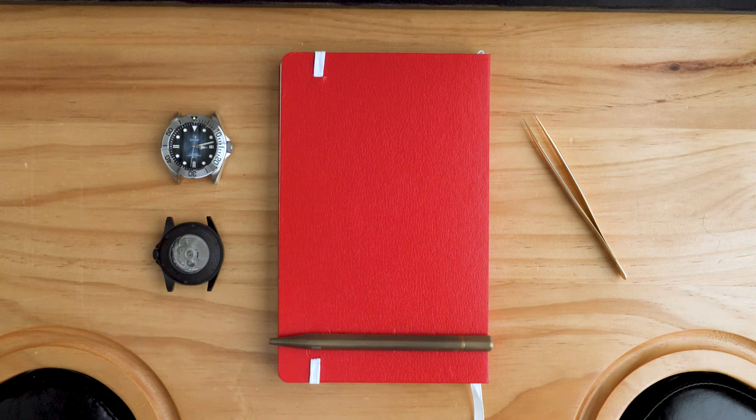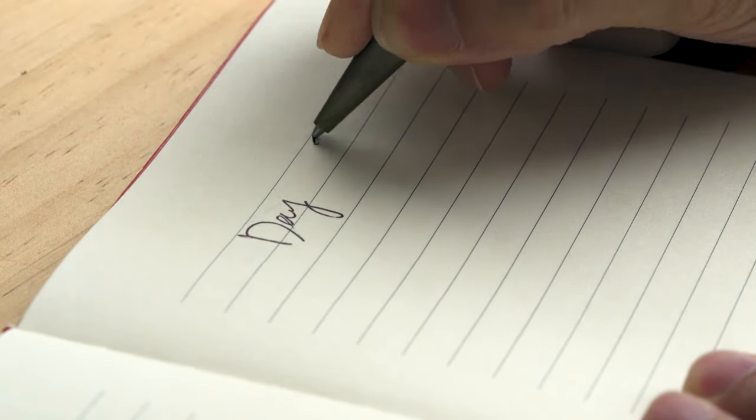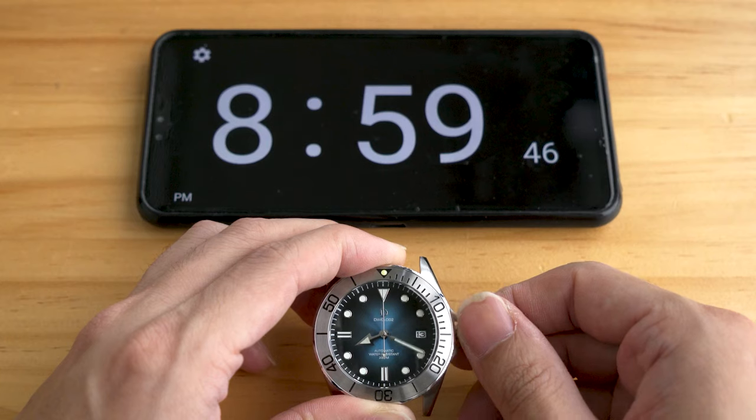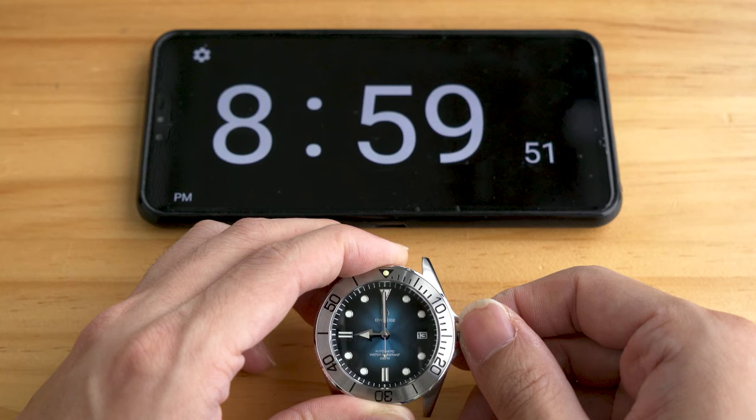Now, if you don't have a time grapher, there is a method to regulate a watch without a time grapher. It'll just take quite a bit more time. You'd want to find an exact time in the day to inspect the watch, say 9pm.